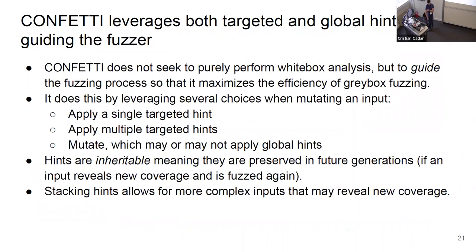Confetti seeks to provide better guidance to fuzzers, not to perform pure symbolic execution. When the fuzzer mutates, it can choose to provide targeted hints or global hints. Regardless of what it chooses, hints propagate to new generations of inputs, and hint inheritance and stacking allow for more complex inputs to be generated.